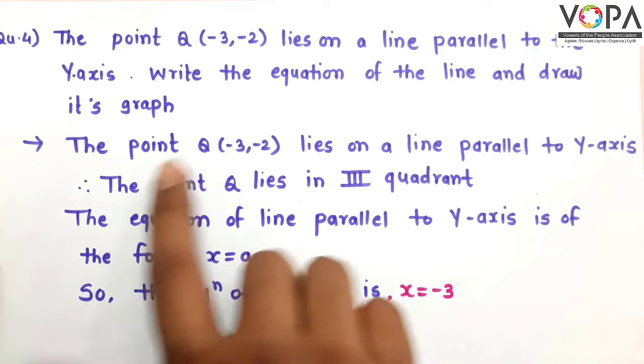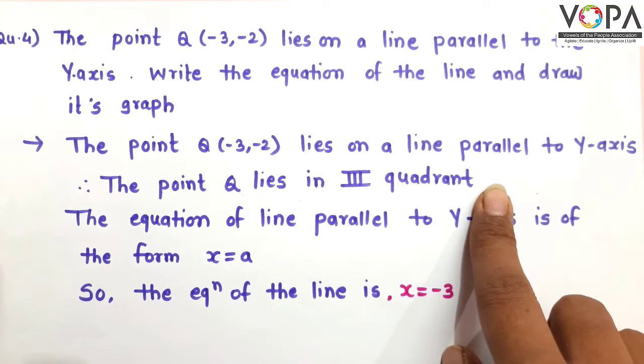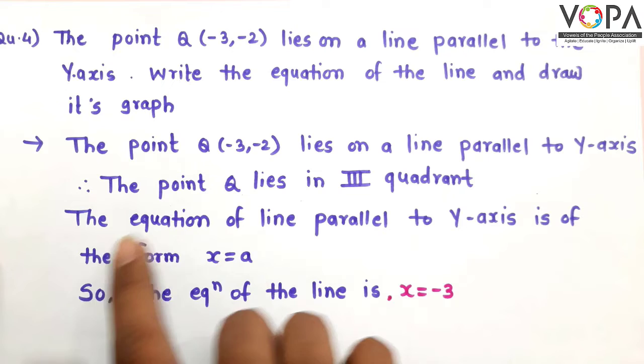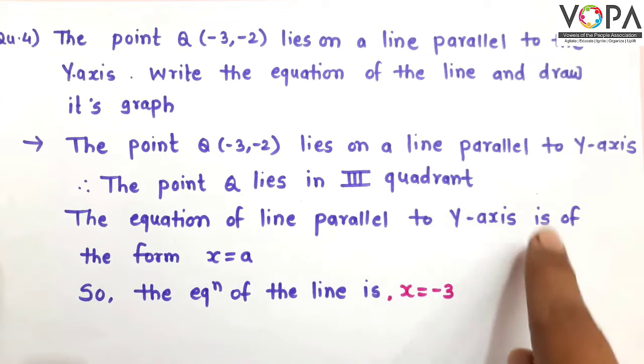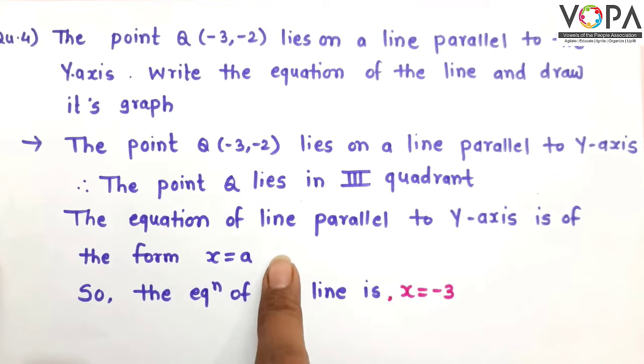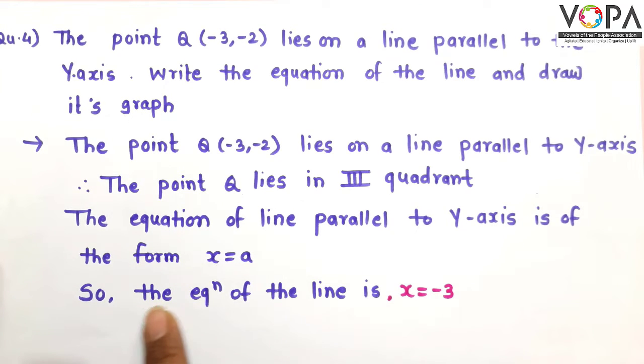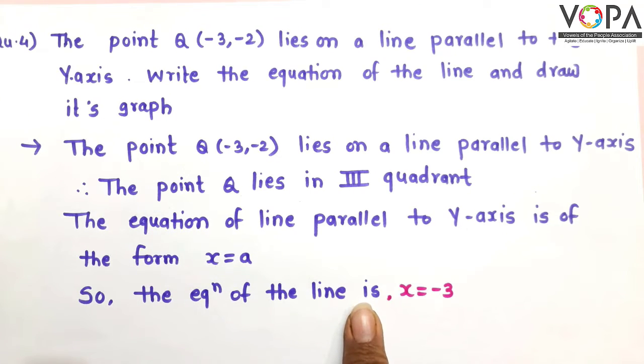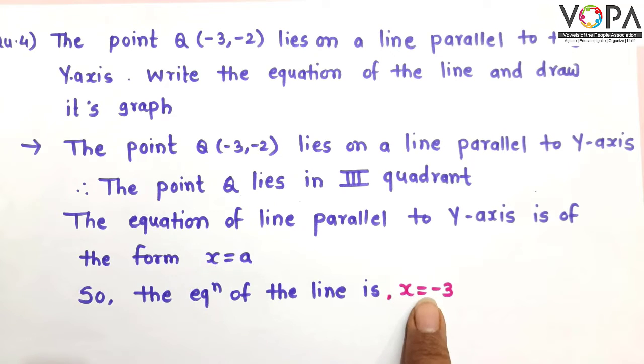The equation of line parallel to y-axis is of the form x equals A. So, the equation of line is x equals -3.